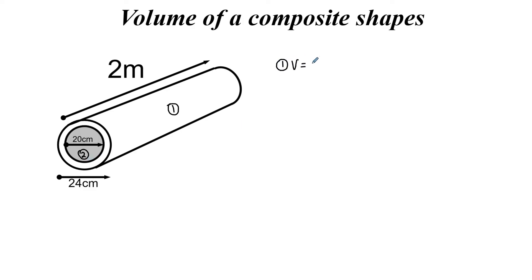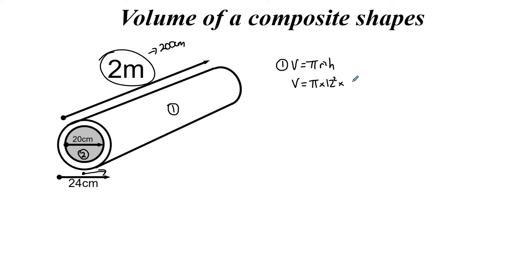Shape one is the outer cylinder: V equals pi r squared h. The outer circle has a diameter of 24, so the radius is 12. The height is 2 meters, which we must convert to 200 centimeters to keep units consistent. So pi times 12 squared times 200 gives 90,477.87 cm cubed.